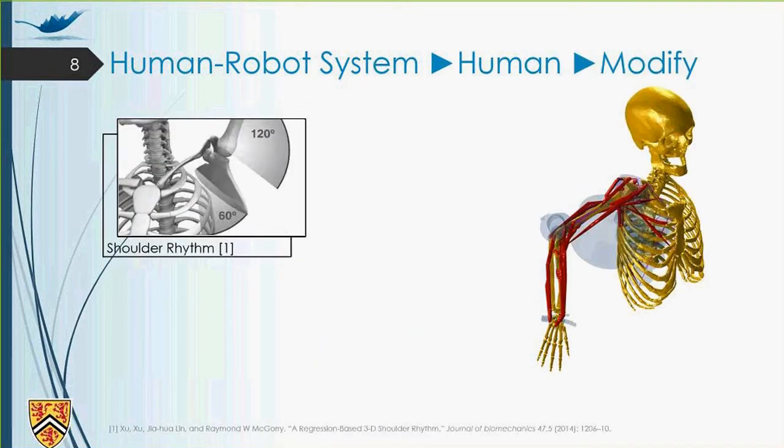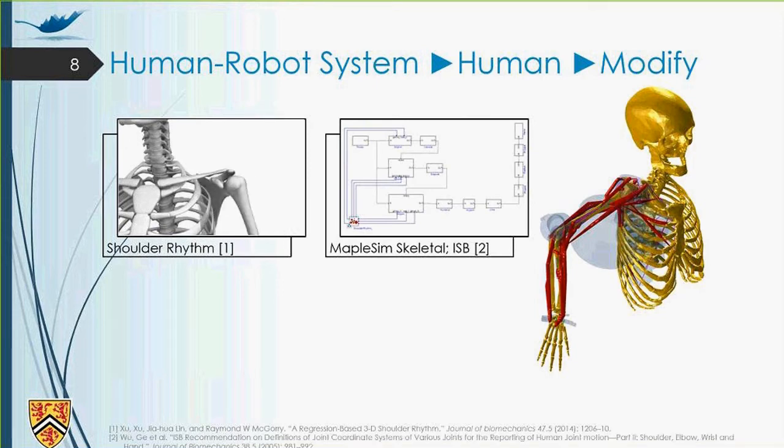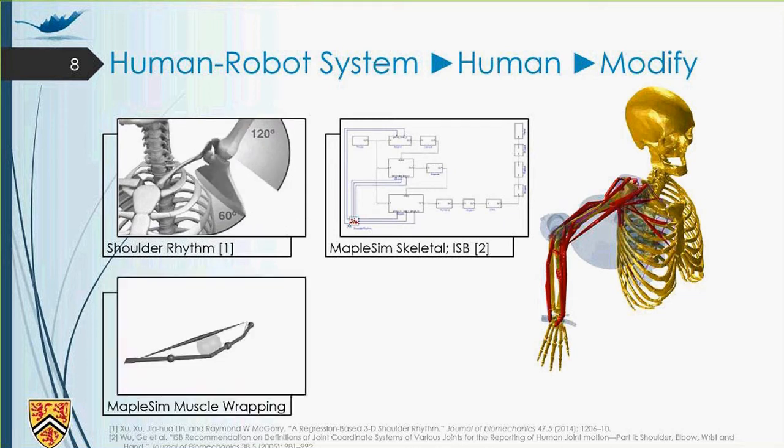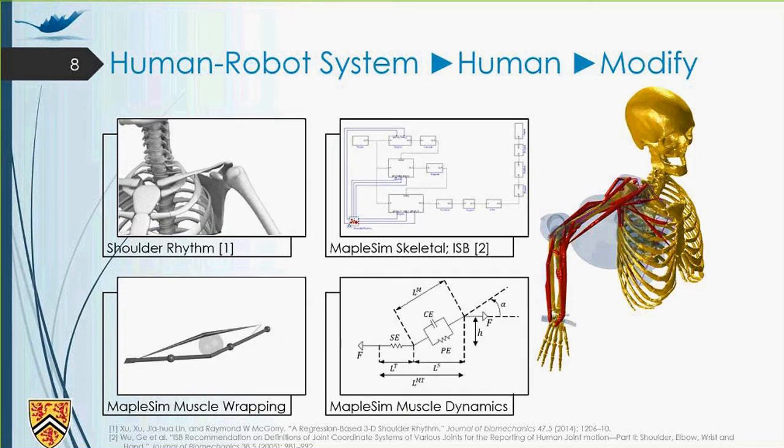So as you see in the picture, we included shoulder rhythm to the model. So when the shoulder moves, the scapula and clavicle are moving with respect to the human body. So we have modeled the shoulder rhythm inside the MapleSim software for this model. So we increased the degrees of freedom of this model from five to ten. And then we used ISB recommendation, International Society of Biomechanics recommendation, on selecting the body fixed frames for the musculoskeletal systems to define it inside the MapleSim software. We also included MapleSim muscle wrapping custom components that I will talk about in the next slide. And finally, we also included muscle dynamics in the MapleSim software.